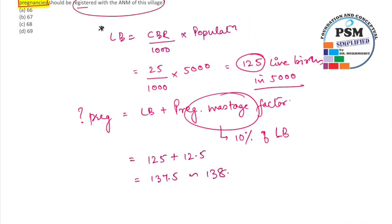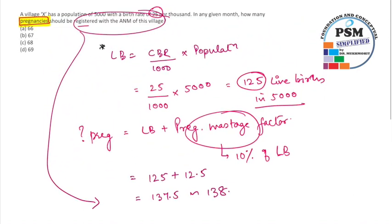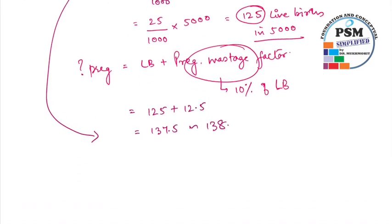So how many pregnancies should be registered? That is where most students got confused. The total pregnancies is 138, and why is the question asking about 66, 67, 68, or 69? Please mind it that at any given time, the pregnancy is going to last for nine months.